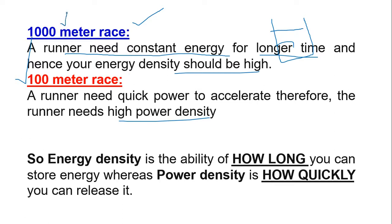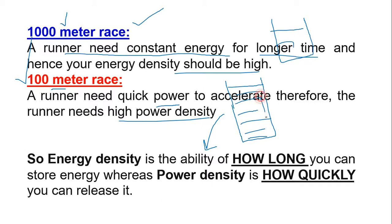The problem is: if you increase energy density, you are compromising power density, and if you increase power density, you are compromising energy density. If you want to run faster, you do not want to carry heavy things — so if you store more energy in a supercapacitor, it will be heavier and you cannot run faster. If we can solve this problem — having both high energy density and high power density — then you can be awarded a Nobel Prize.